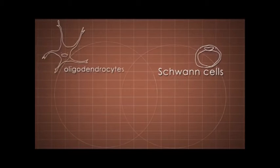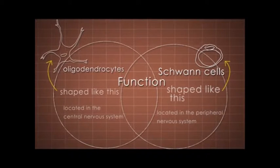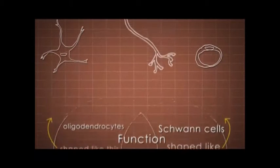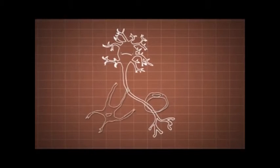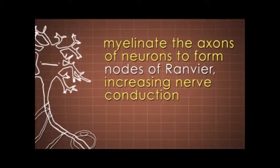Lastly, we have our oligodendrocytes and Schwann cells. Although they have different shapes and are located in different parts of the nervous system, oligodendrocytes and Schwann cells do basically the same thing: wrap around and myelinate the axons of neurons to form the nodes of Ranvier, increasing nerve conduction.